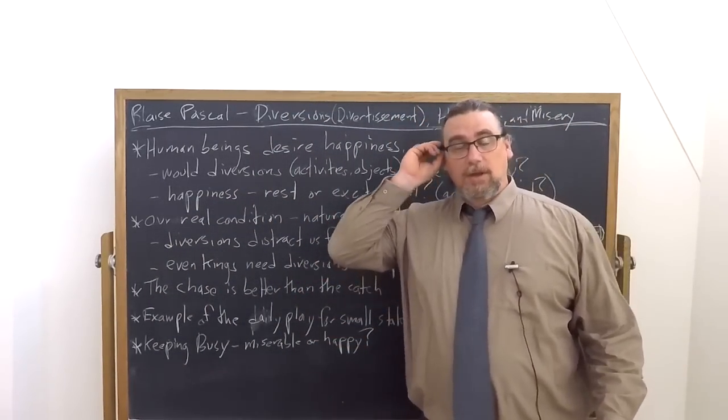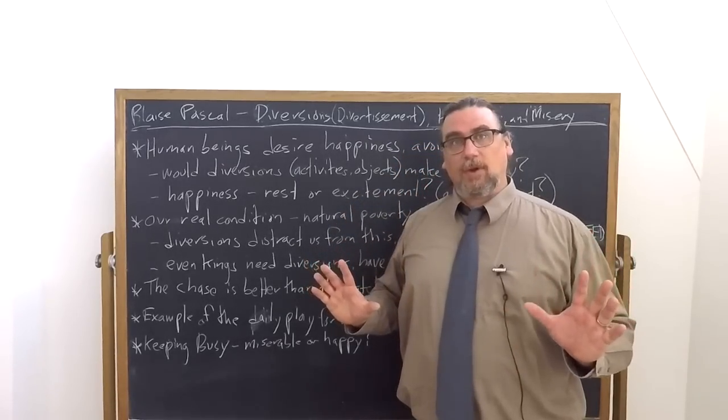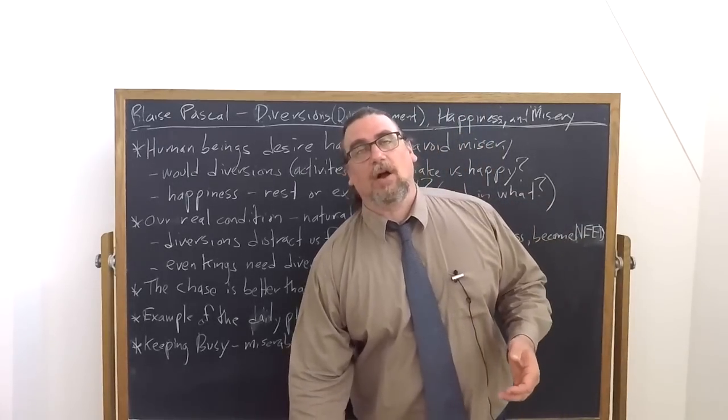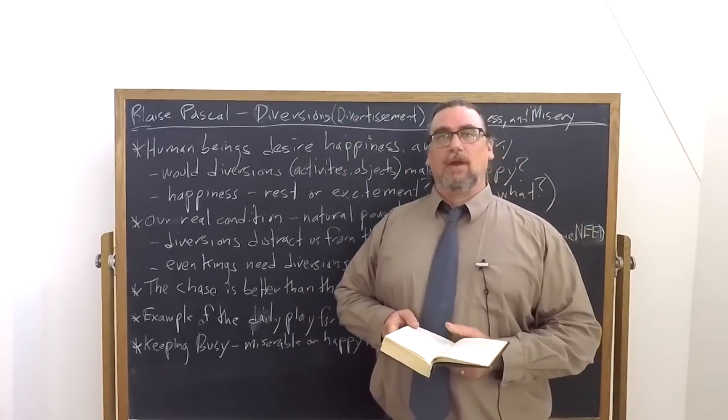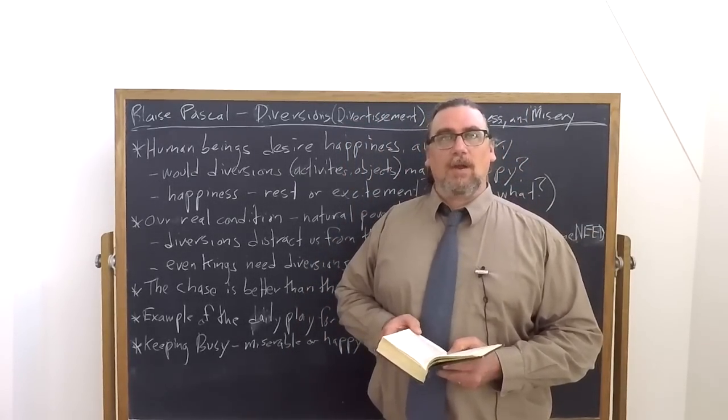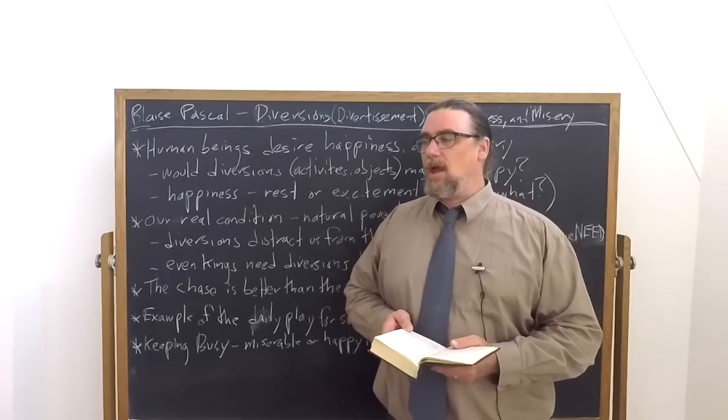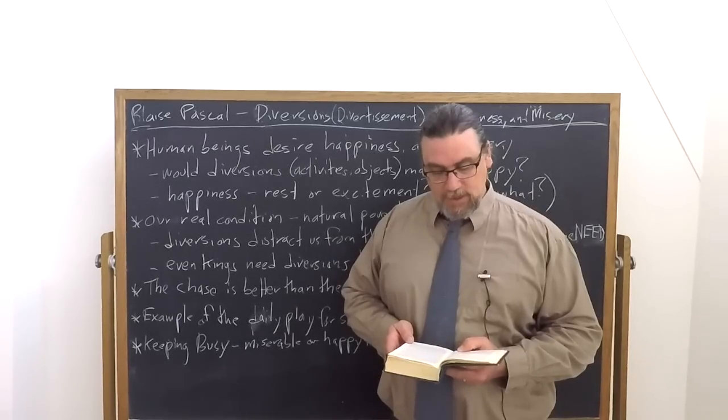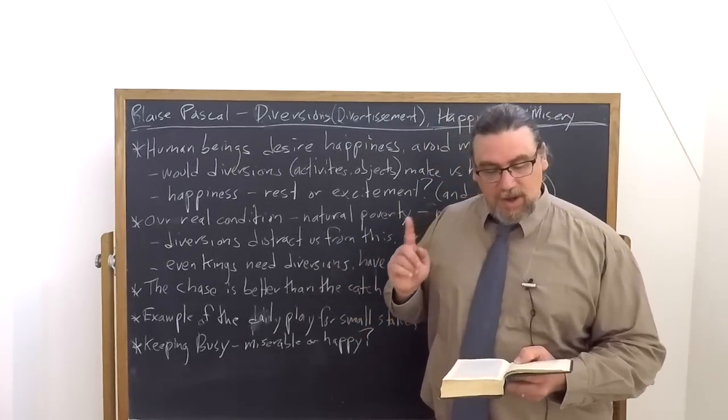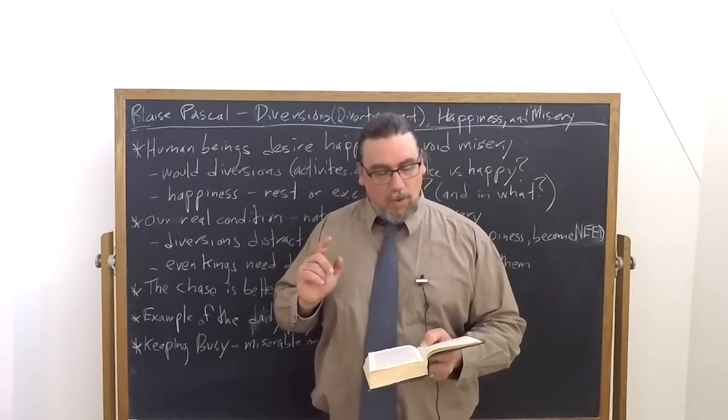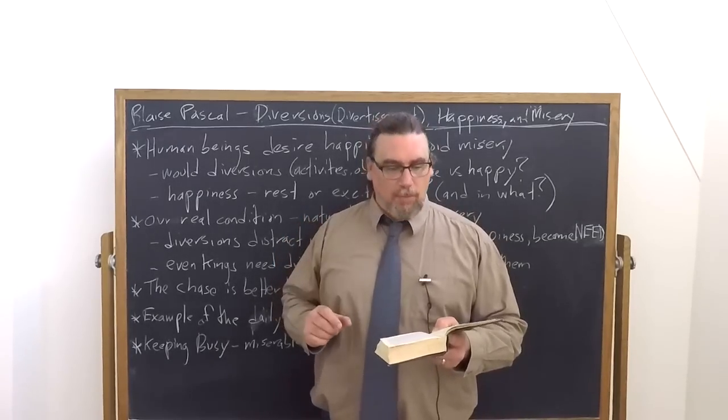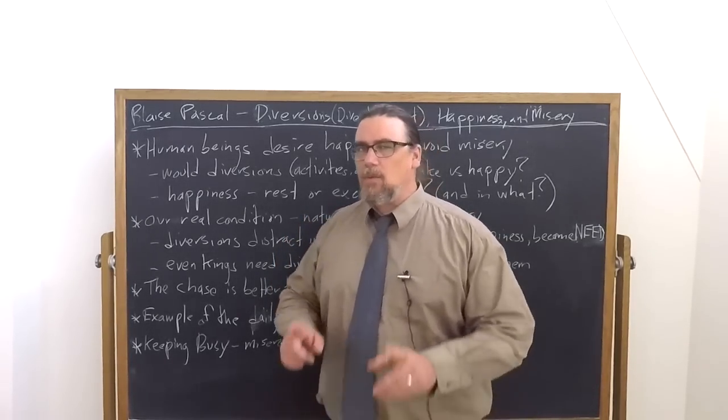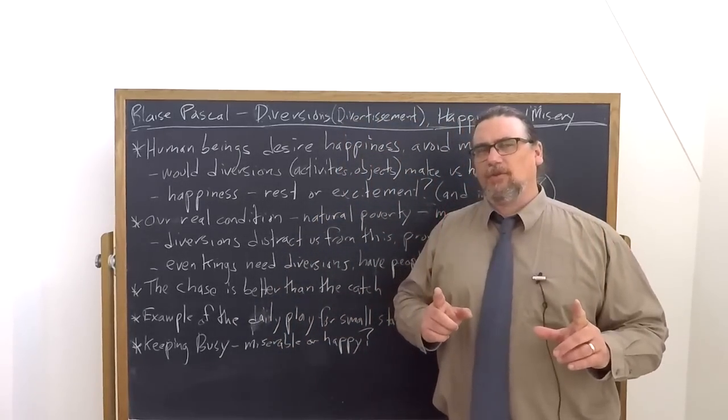And that's one thing that diversions help us to do. What is our real human condition? There's good points to it, but there are also some bad points. He says that we exist in a state of what he calls natural poverty. We are not as good as we think. We are not as smart as we think. We are not as well off as we think in many different ways. He says there's one real reason, the natural poverty of our feeble and mortal condition. So miserable that nothing can comfort us when we think of it closely.